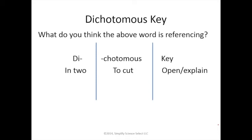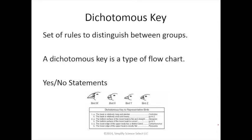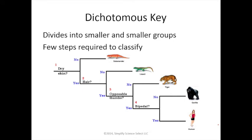We have another term: dichotomous key. Breaking it down: 'di' means two, 'chotomous' means to cut, and 'key' means to open or explain — so it means to cut into two and explain. A dichotomous key is a set of rules to distinguish between groups, like a flowchart. There are yes/no statements or questions that have only one of two answers, letting us start with general categories and divide into smaller and smaller groups to classify what something is.